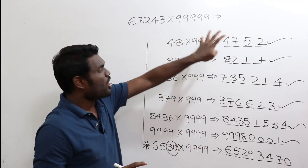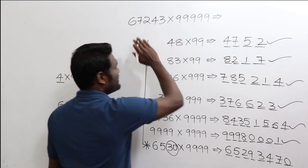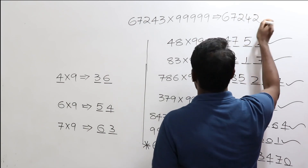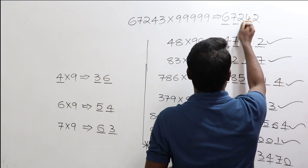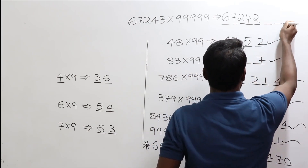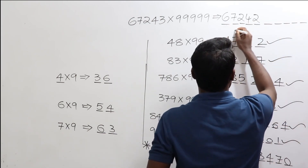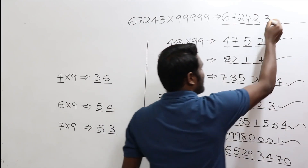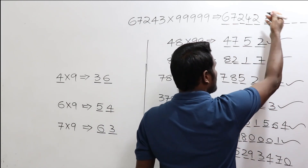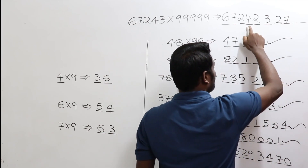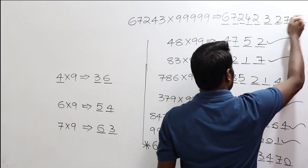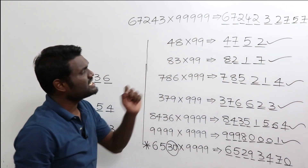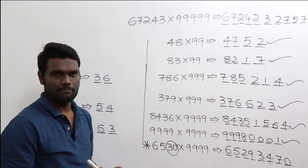Let's try a bigger number — same logic applies. Reduce it by one: this gives 67242. As you have five digits, you need five more digits. For 6, add 3 to get 9. For 7, add 2 to get 9. For 2, add 7 to get 9. For 4, add 5 to get 9. For 2, add 7 to get 9. So the answer is 6724232757.